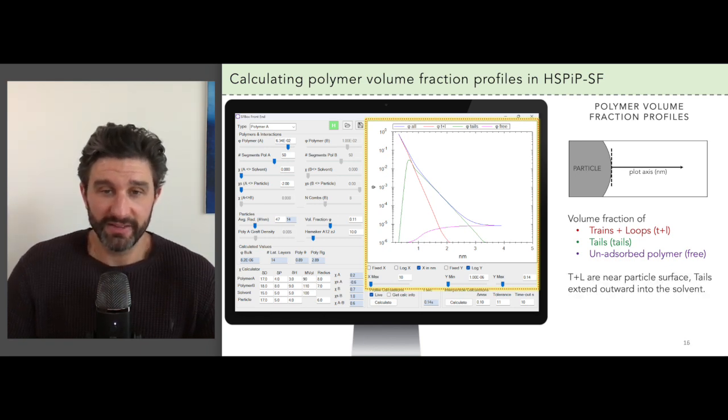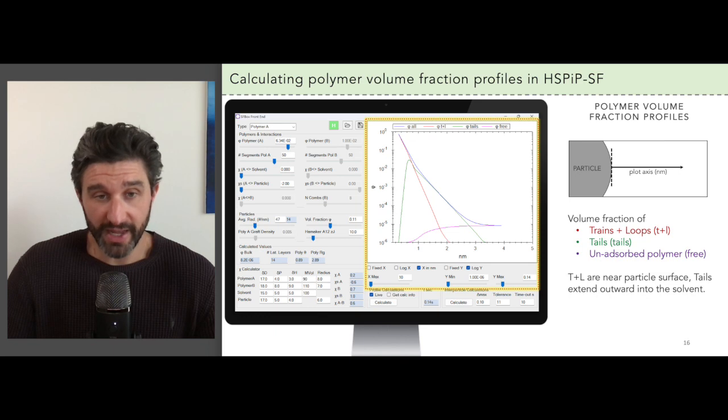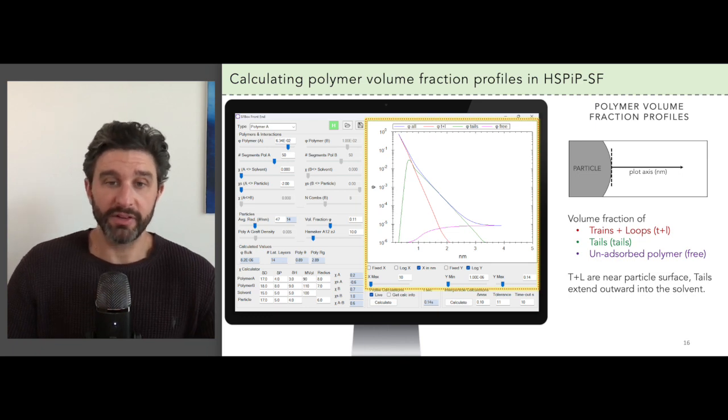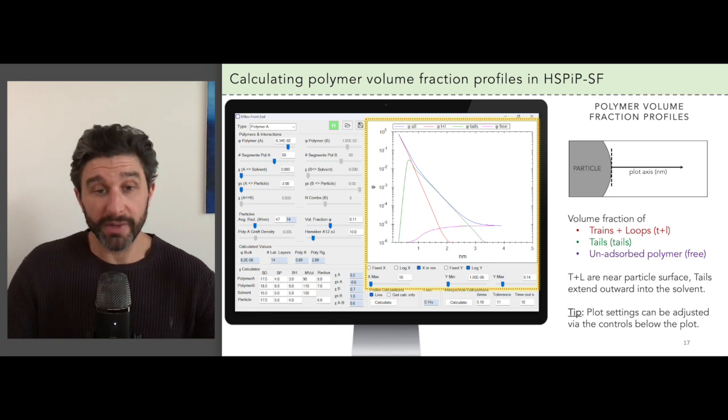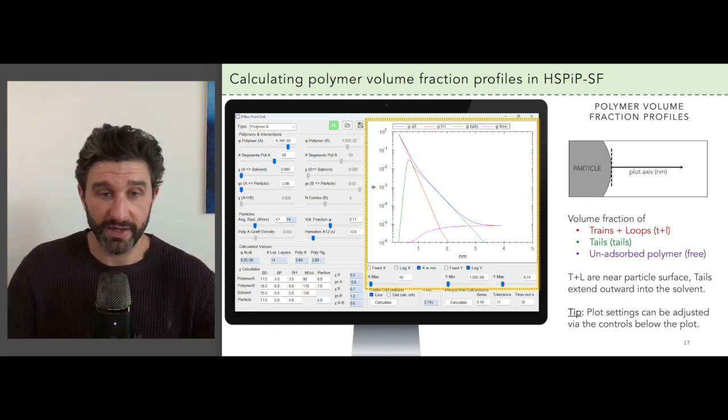As you would expect, loops and trains plotted in red have volume fraction profiles that are localized near the particle surface. The tails plotted in green extend further out into the solvent. Note that you can also adjust the settings for this plot by using the controls provided in the lower right of this window.